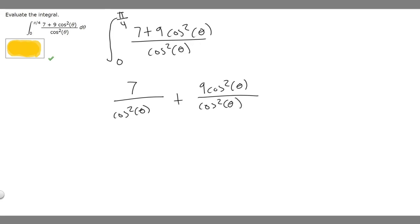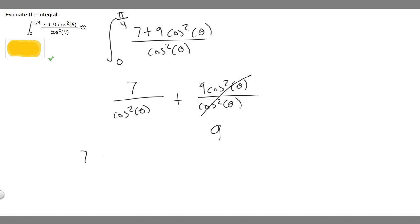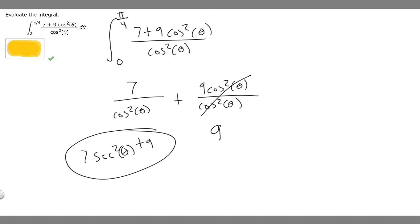This is going to allow us to solve it. These terms are going to cancel — 9 times the cosine squared of theta over the cosine squared of theta cancels to give plus 9. For the first part, 7 over cosine squared of theta is the same as 7 times 1 over cosine squared of theta. Since the inverse of cosine is secant, this becomes 7 times secant squared of theta. So the whole expression becomes 7 times secant squared of theta plus 9.